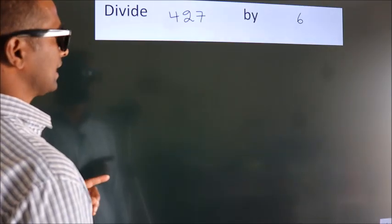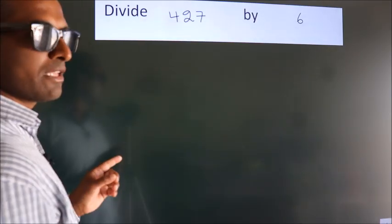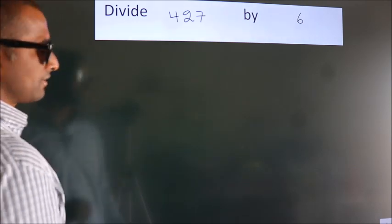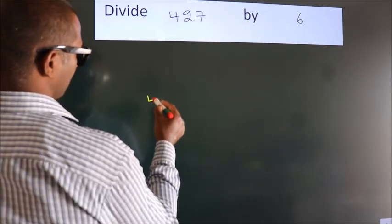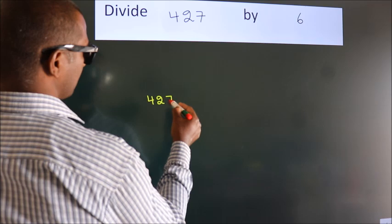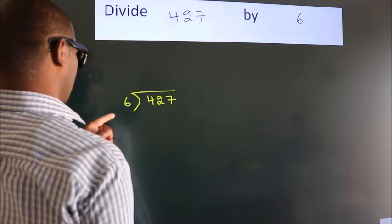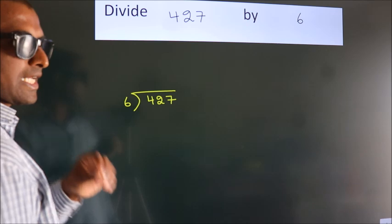Divide 427 by 6. To do this division we should frame it in this way. 427 here, 6 here. This is your step 1.